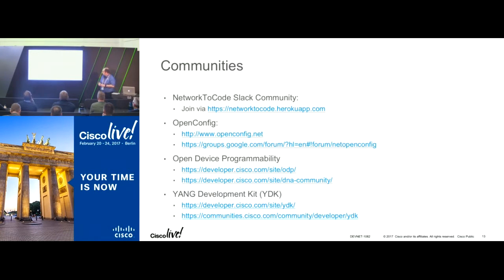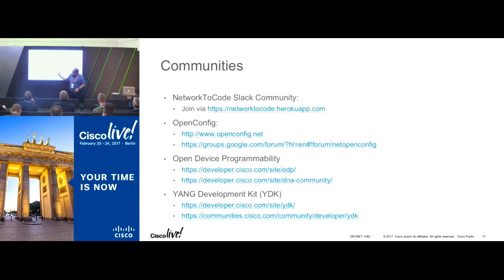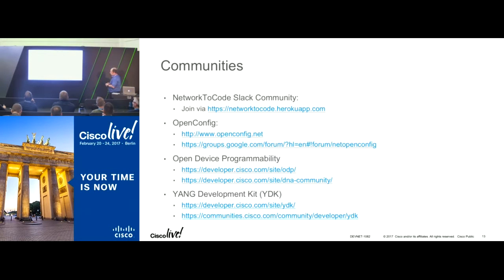Cisco has a bunch of stuff we call Open Device Programmability, supported by the developer.cisco.com website. Within that we also have the DNA community for people interested in the broader sweep of products around data models and automation, including DNA Center. There's a lot of support there — sample code, reference guides, and discussion forums for assistance with Cisco products in the area of automation and programmability.